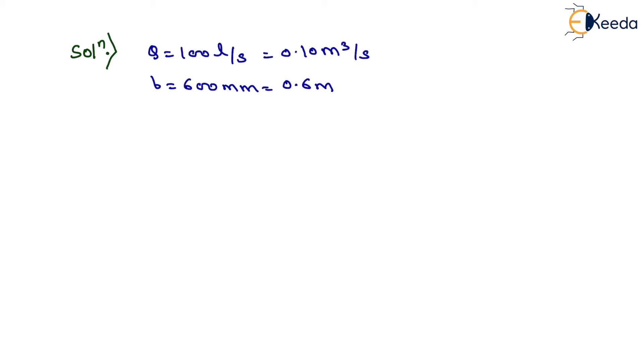Depth of flow is given as 300 mm, so it equals 0.3 meter. Now we calculate the area of flow, A, which equals B times D, so 0.6 times 0.3. Therefore, A equals 0.18 meter square.